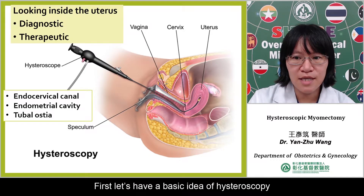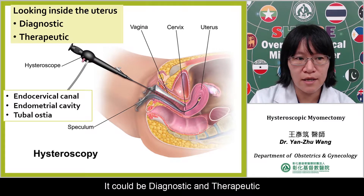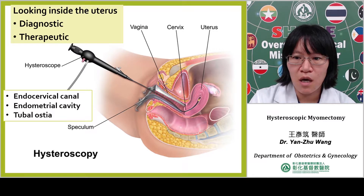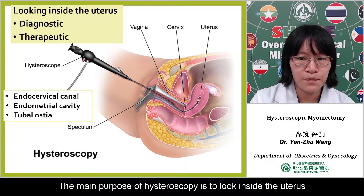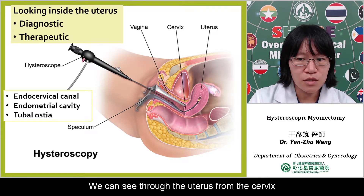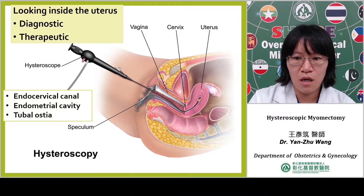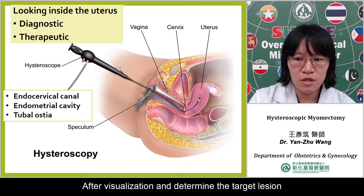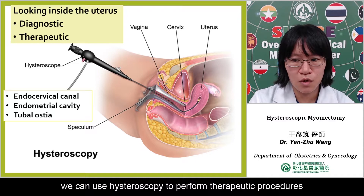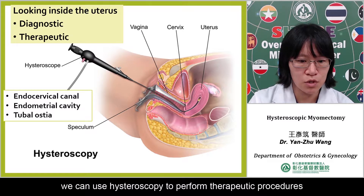First, let's have a basic idea of hysteroscopy. It could be diagnostic and therapeutic. The main purpose of hysteroscopy is to look inside the uterus. We can see through the uterus from the cervix, endocervical canal, and the endometrial cavity, and bilateral tubal ostia. After visualization and determining the target lesion, we can use hysteroscopy to perform a therapeutic procedure.